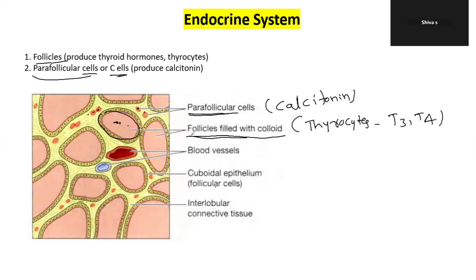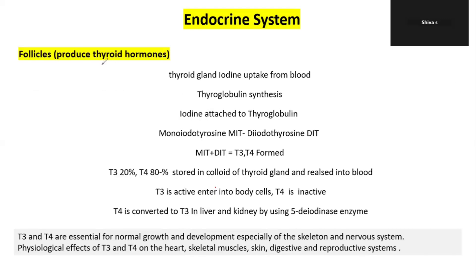The follicle cells produce T3 and T4 hormones. This T3 and T4 hormone production from follicle cells is very important. Follicles also generate and store thyroid hormones.